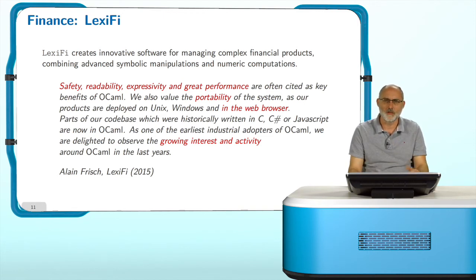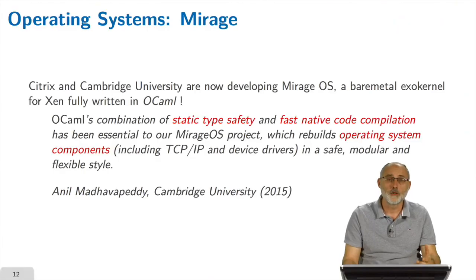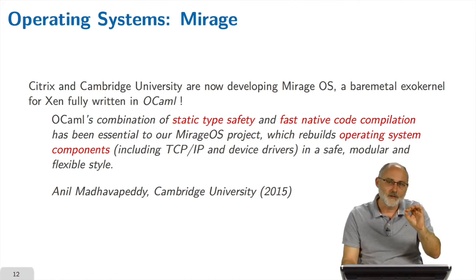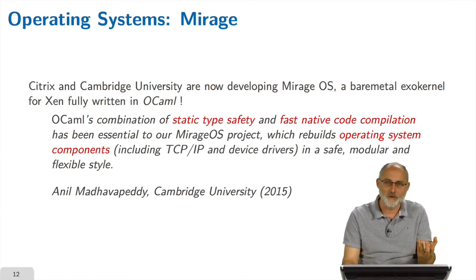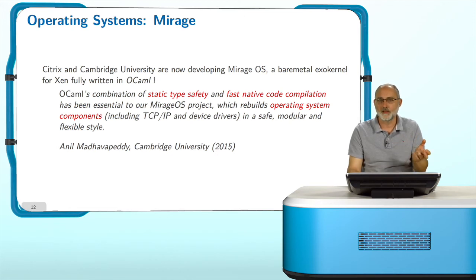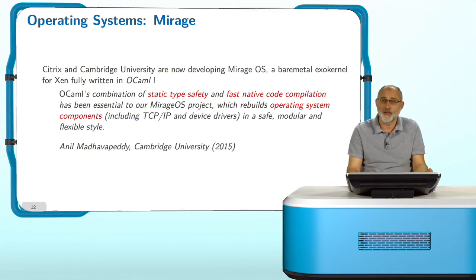There is a growing interest and activity around OCaml today. In operating systems, you find the Mirage project, which is a fantastic undertaking to write a full exokernel or unikernel entirely in OCaml. This means writing every functionality needed by an application to run on bare metal — pieces of the operating system linked directly inside the application — to be orders of magnitude faster than an application run through a conventional operating system. This has already been done entirely in OCaml. For them, the combination of static type safety and fast native code compilation is fundamental for doing this at the operating system level.